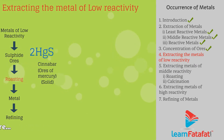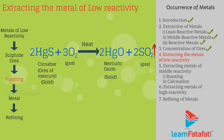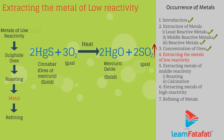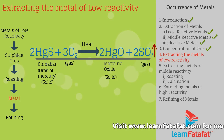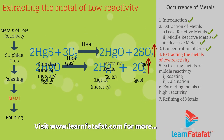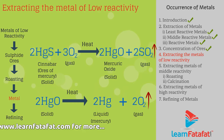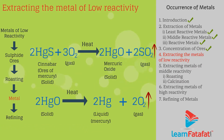For example, cinnabar (HgS) is an ore of mercury. On heating, it is converted to mercuric oxide (HgO). On further heating, mercury metal can be obtained. That is: 2HgS + 3O2 → 2HgO + 2SO2, and then 2HgO → 2Hg + O2.